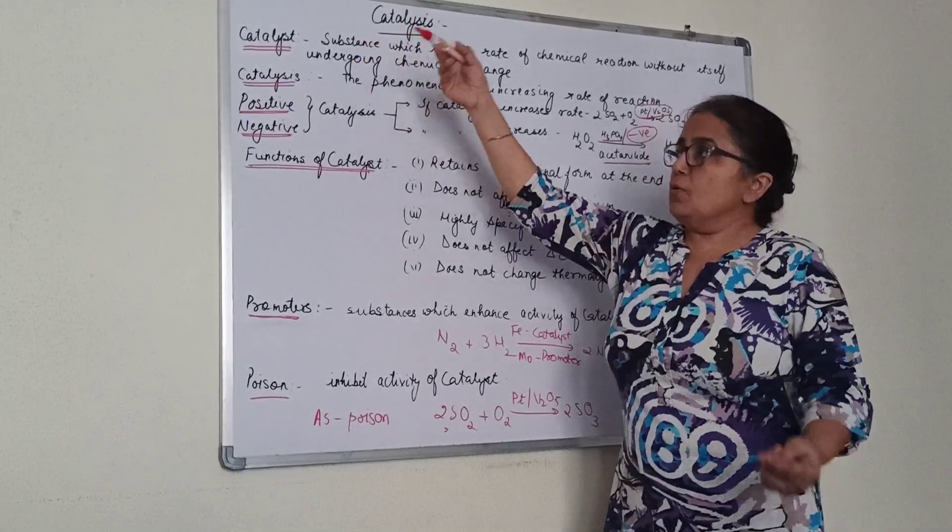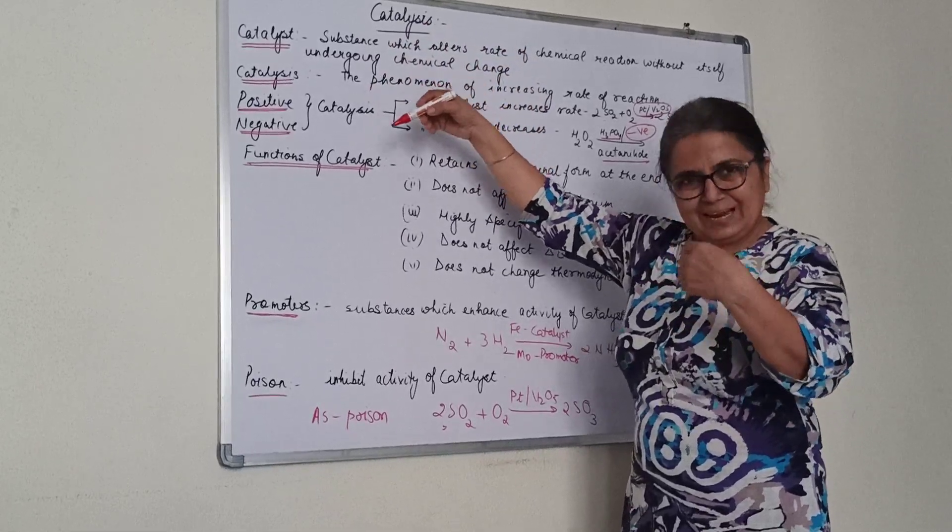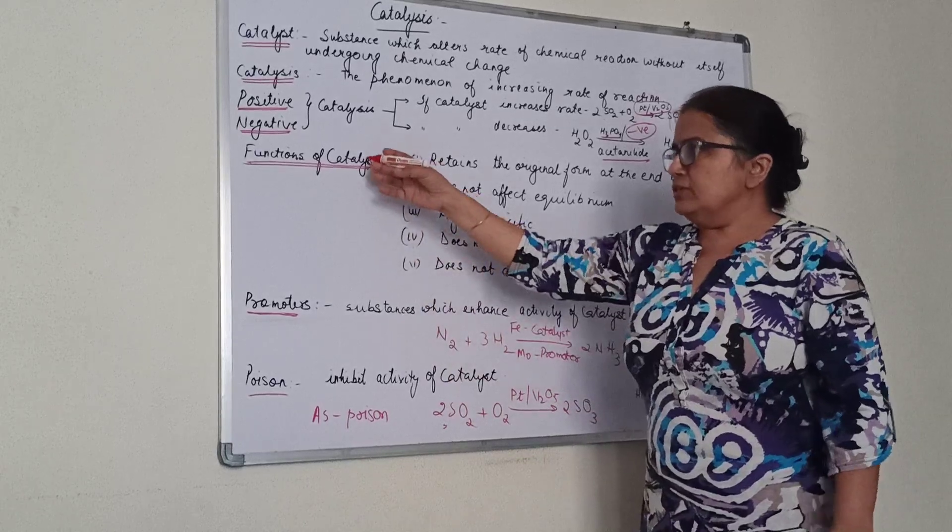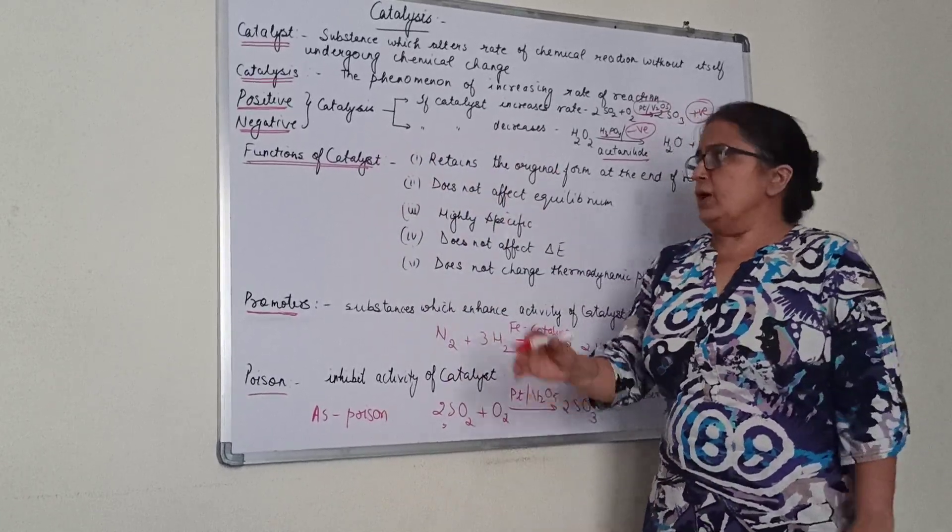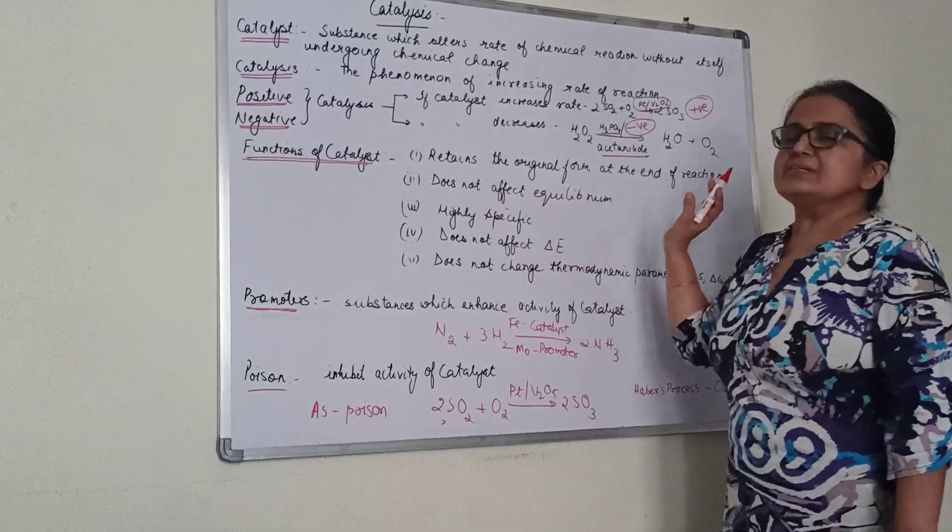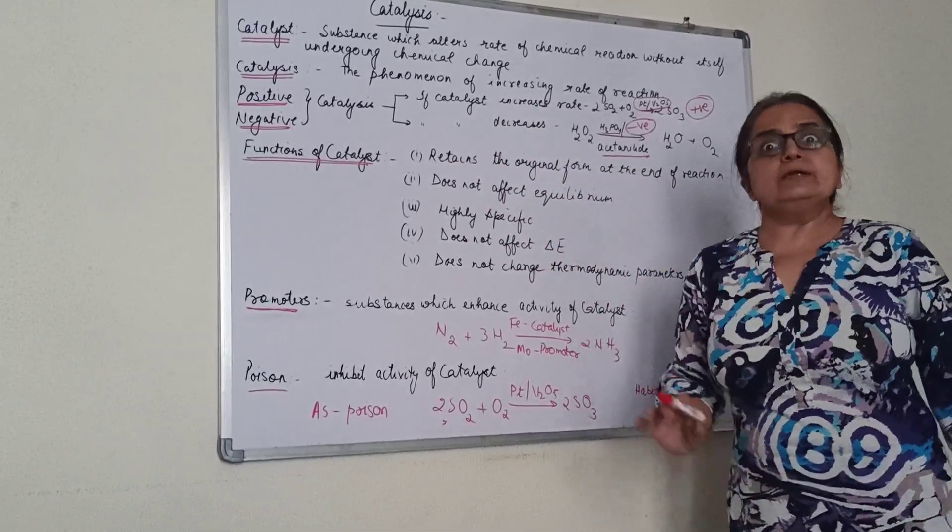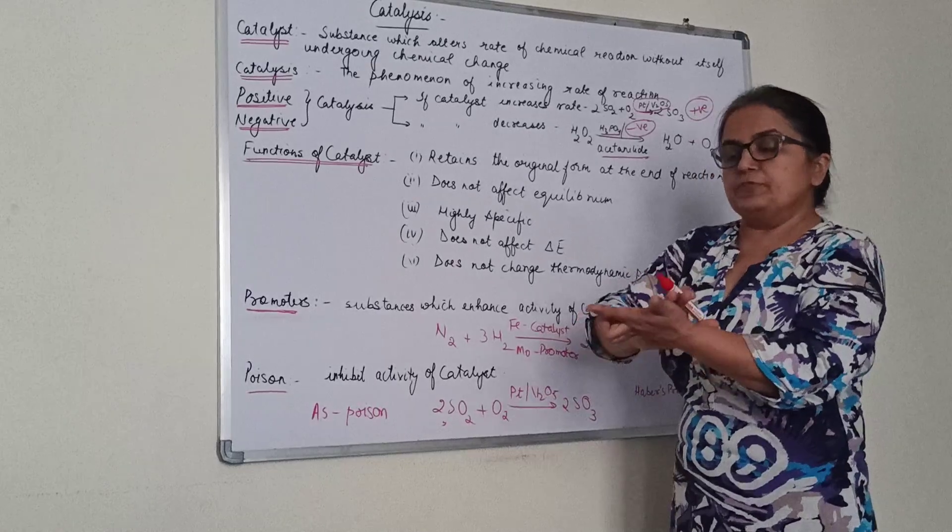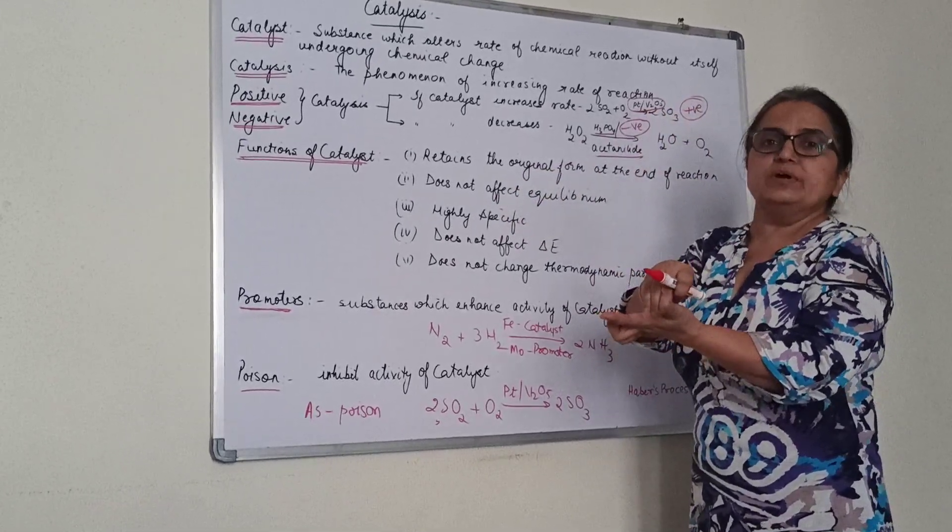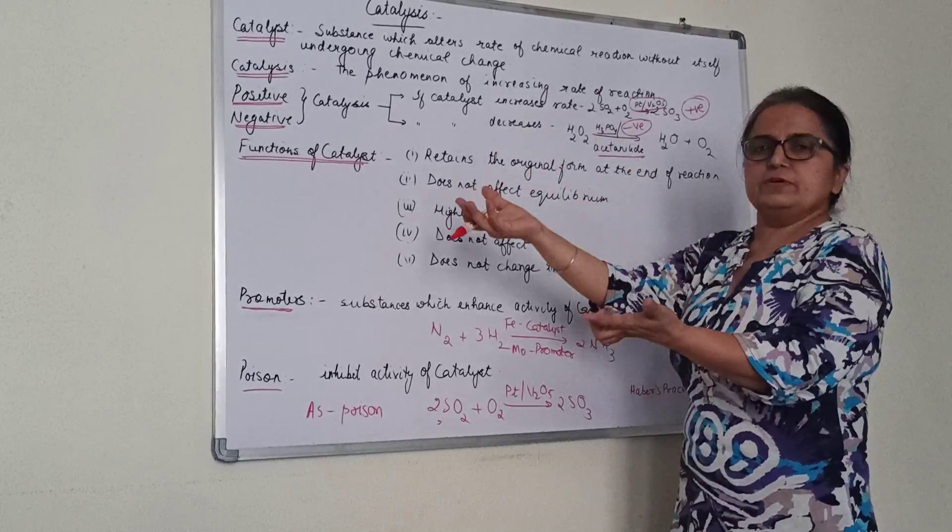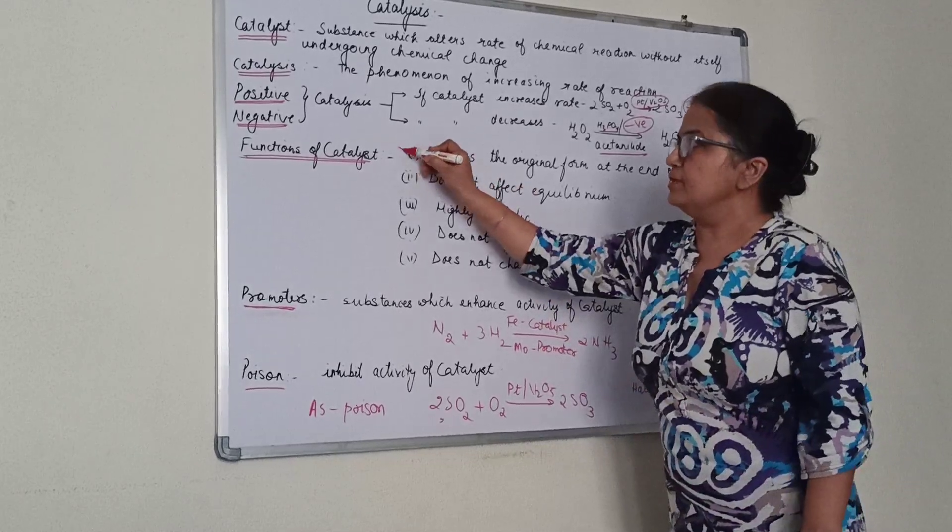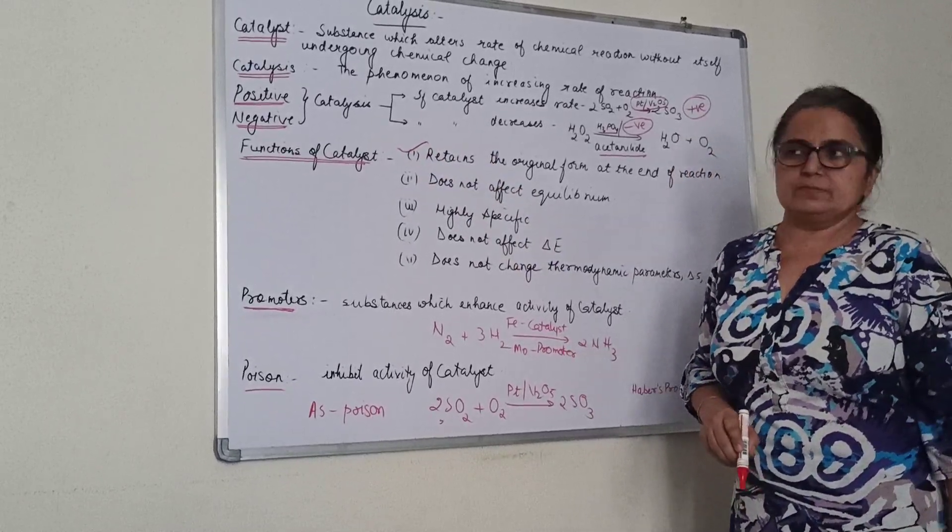So we've discussed what a catalyst is, the phenomena of catalysis, and types of catalysts. Now, the functions of the catalyst. First, the original form is retained. Physically, it may take part—it may provide a surface allowing reactants to attach to it. Products form and leave the surface, but nothing happens to the catalyst chemically. This is the first function.